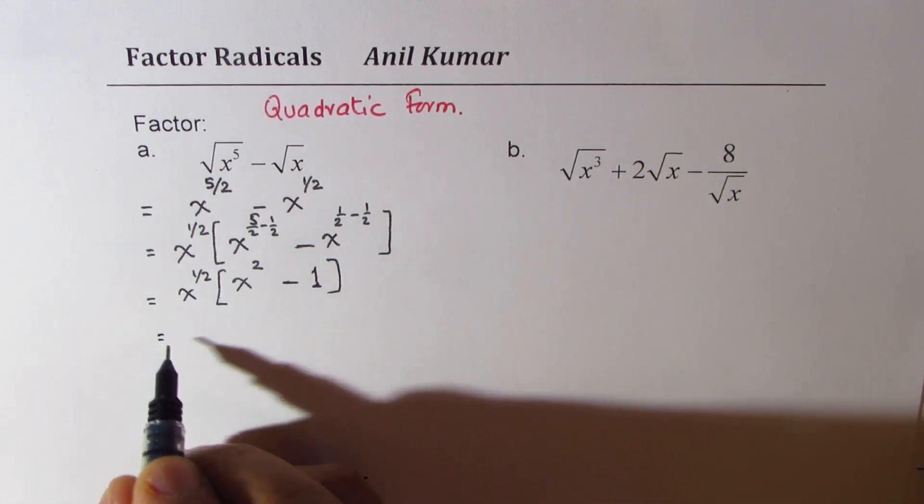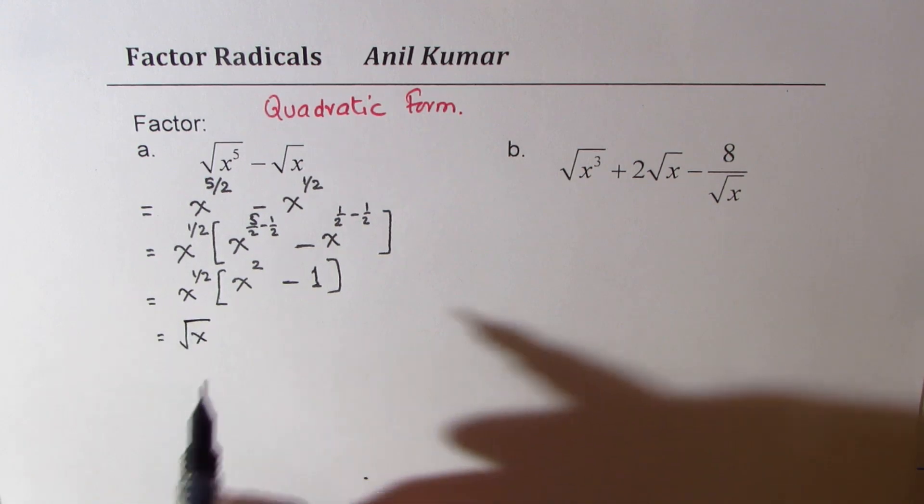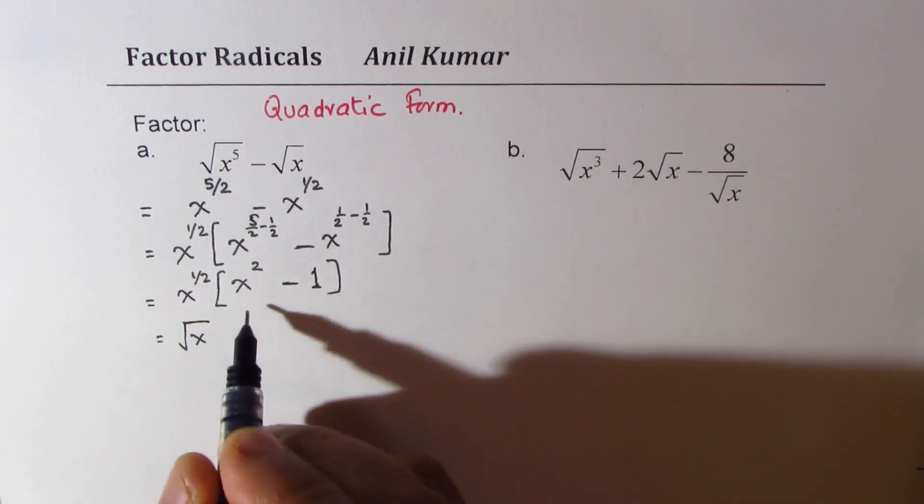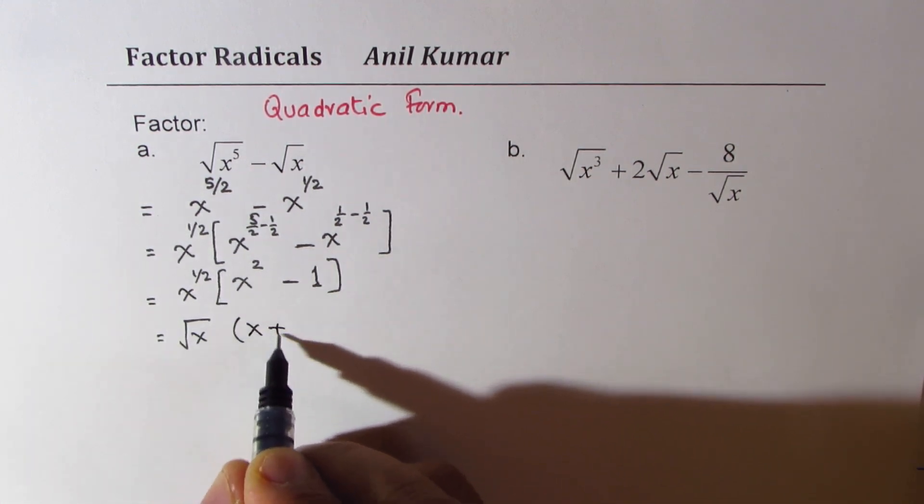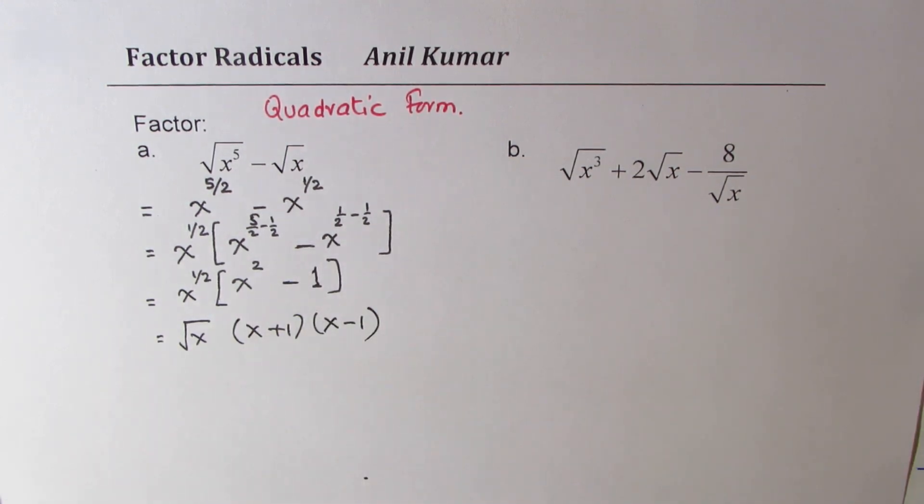So now we can write it back into the radical form, which is square root of x. And this is difference of squares. We could write this as x plus 1 times x minus 1. Do you see that? So that is how you would actually factor such expressions.